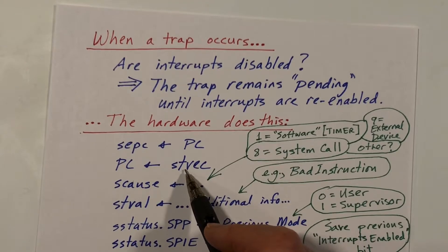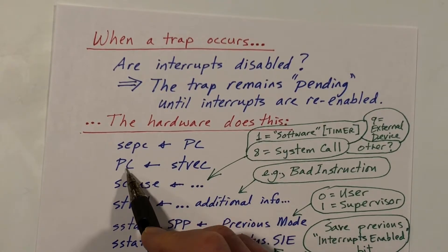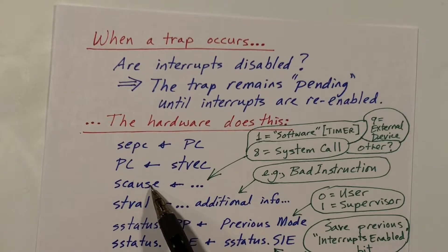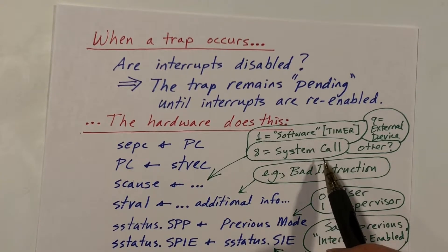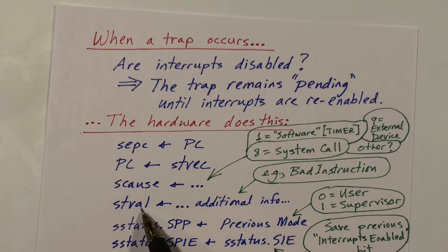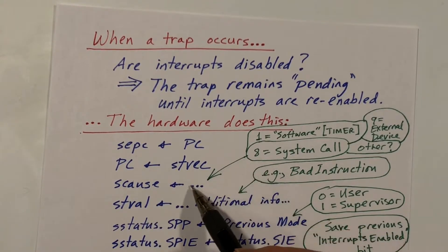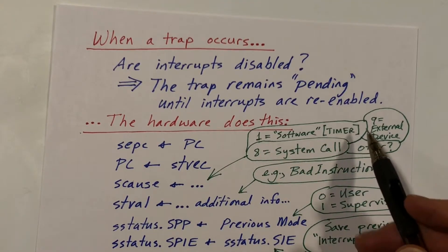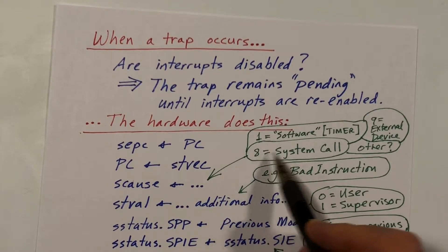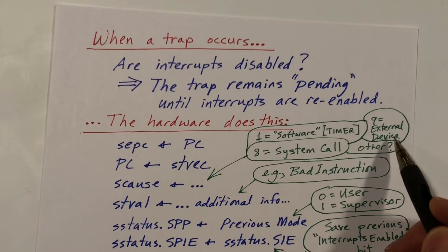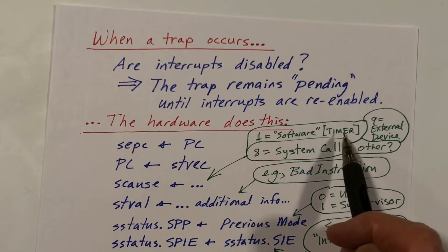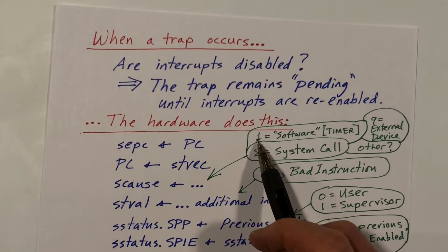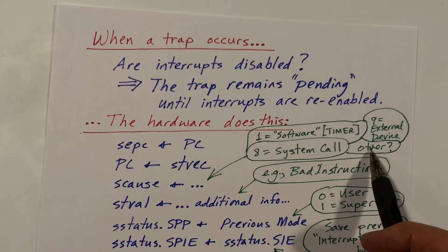The hardware branches to the first instruction of the handler code by copying the value in STVEC to the program counter. It saves in the SCAUSE register information about what caused the trap, and may save additional information in the CSR called STVAL. There are several causes we're concerned with: a system call has cause 8, an interrupt from an external device has cause 9, a software interrupt related to timer interrupts has cause 1, and anything else is a program exception.